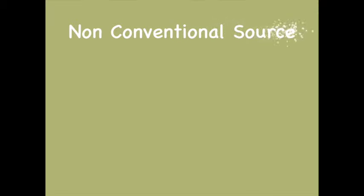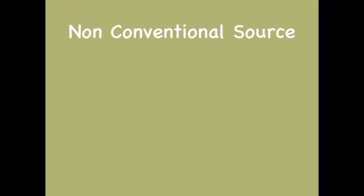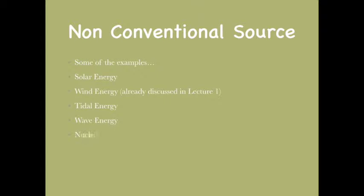Let's start with the Non-Conventional Sources of Energy. These are just opposite to the conventional sources of energy, and hence these are renewable sources of energy — they won't get depleted. These are available all the time. Some examples are Solar Energy, Wind Energy (already discussed in Lecture 1), Tidal Energy, Wave Energy, Geothermal Energy, and Nuclear Energy. There are actually many more types, but we are going to discuss only a few here.